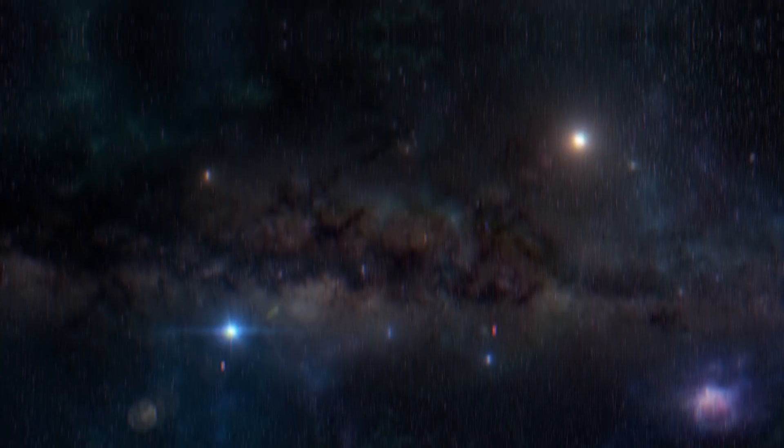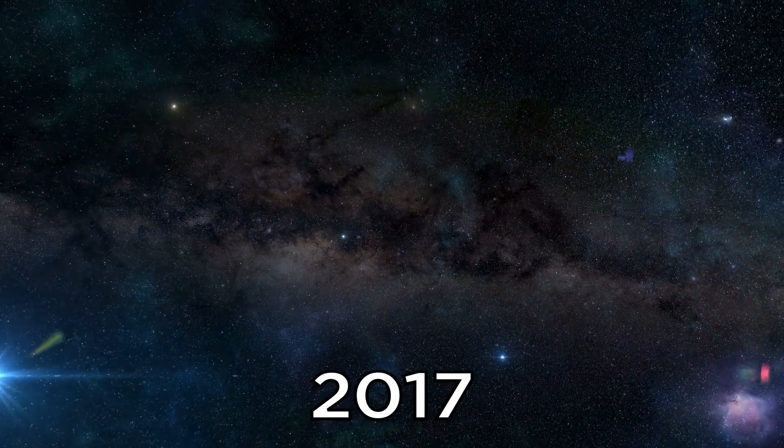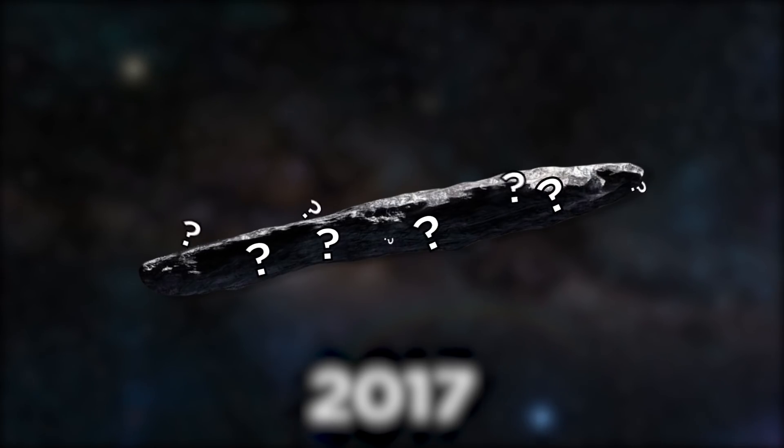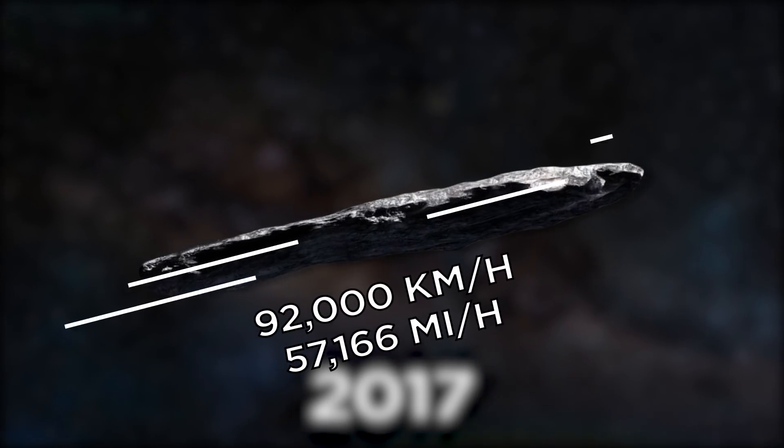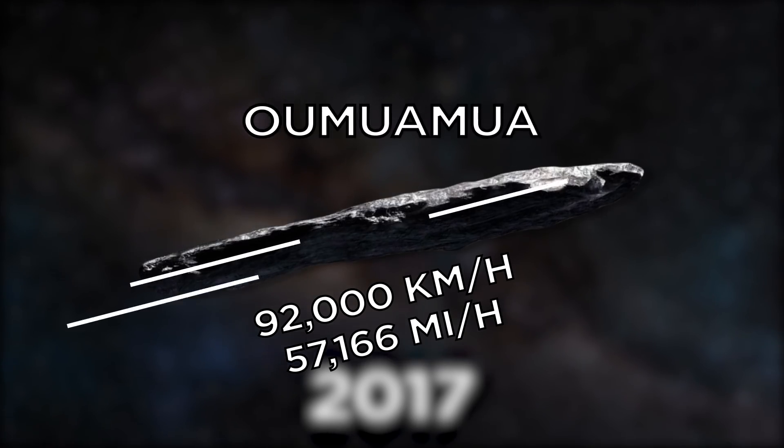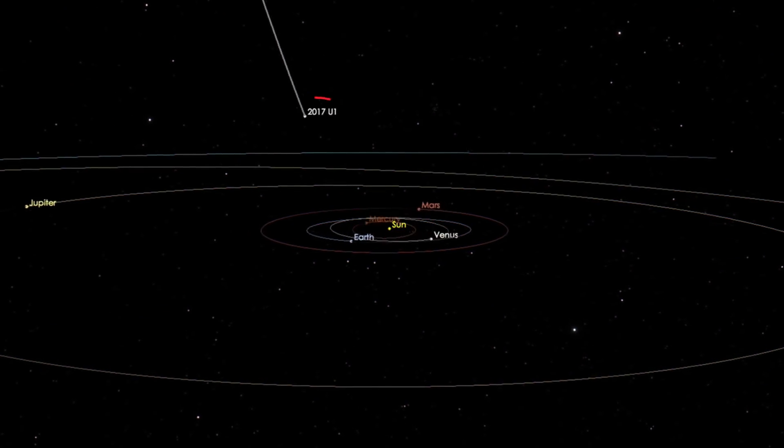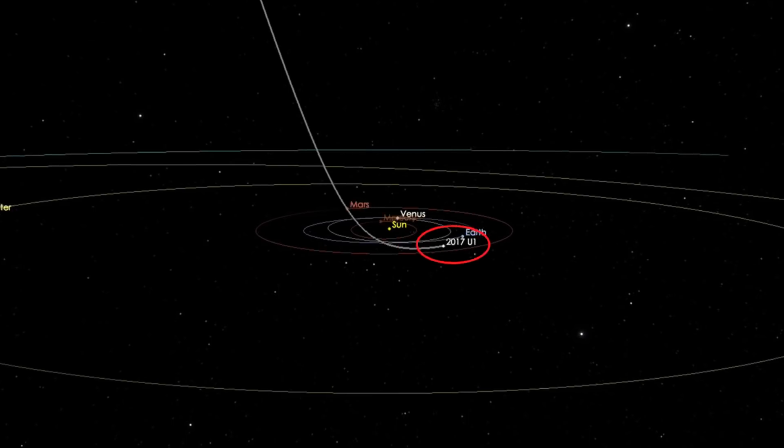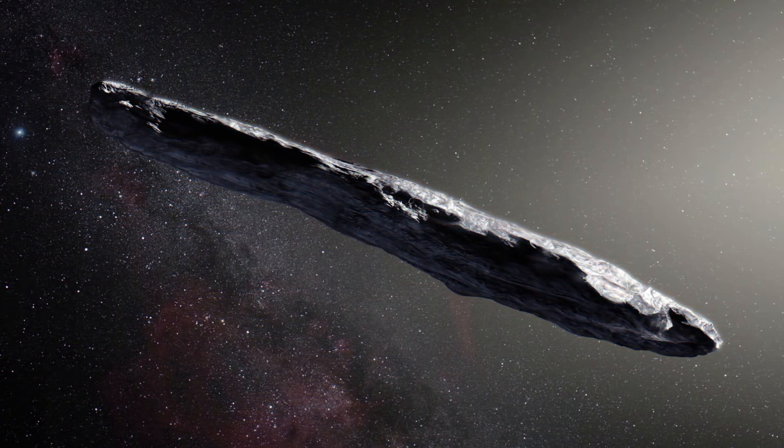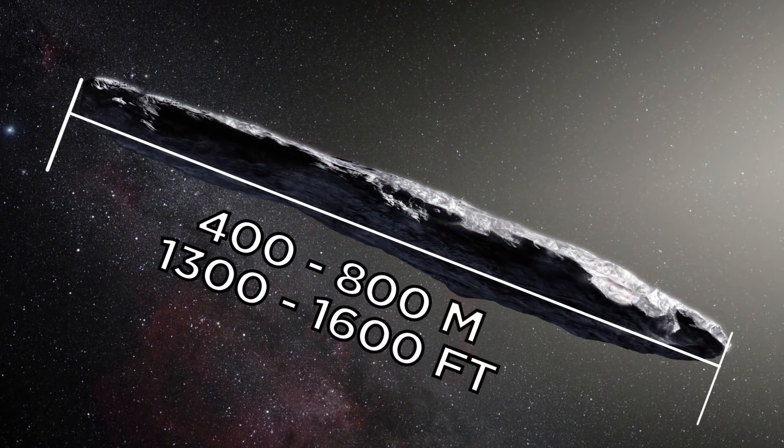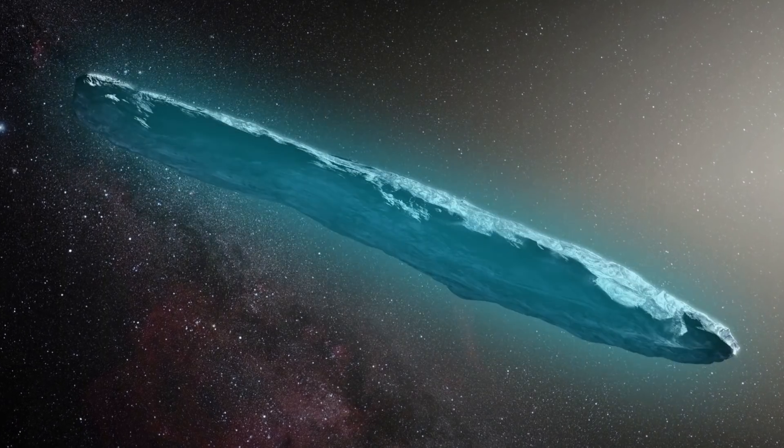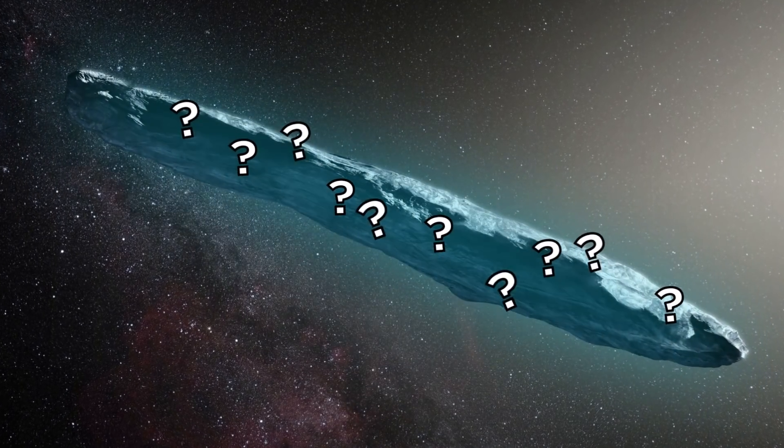Number three, Oumuamua. In October 2017, researchers discovered a very unusual space object moving at almost 92,000 kilometers per hour. It was eventually called Oumuamua, and it's the first and only observed interstellar object that's passed through our solar system. Researchers know it's between 400 and 800 meters long, with a thin cigar-shaped profile, but what it is exactly is up for debate.